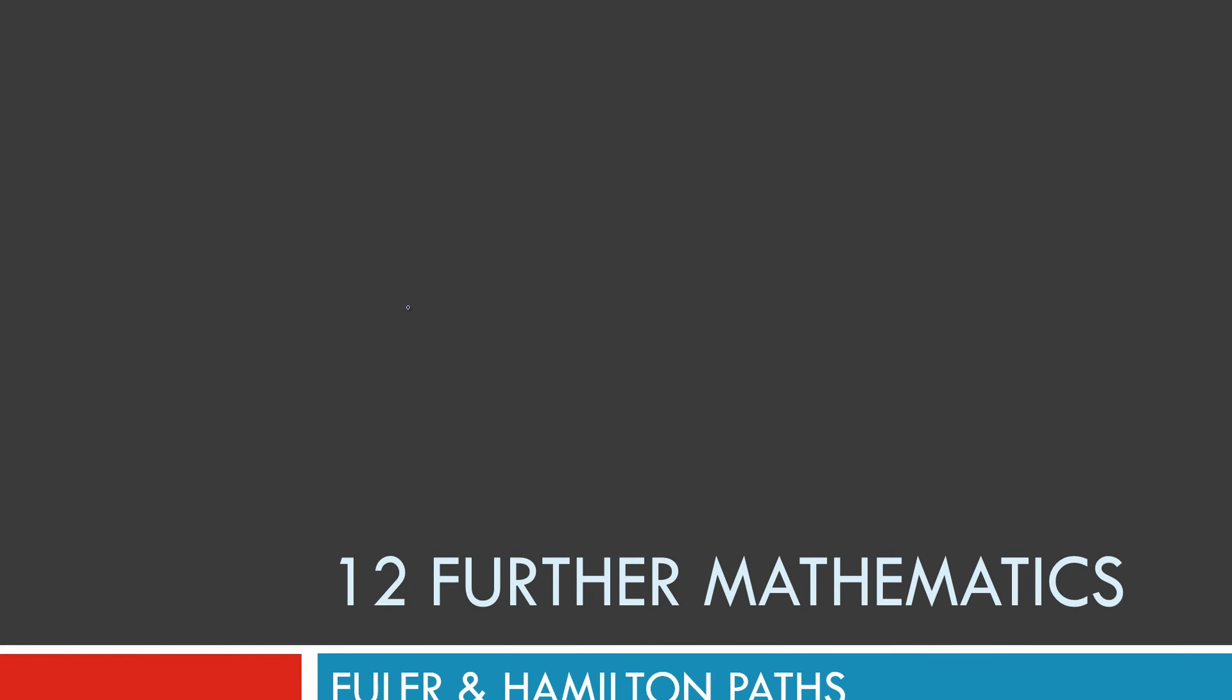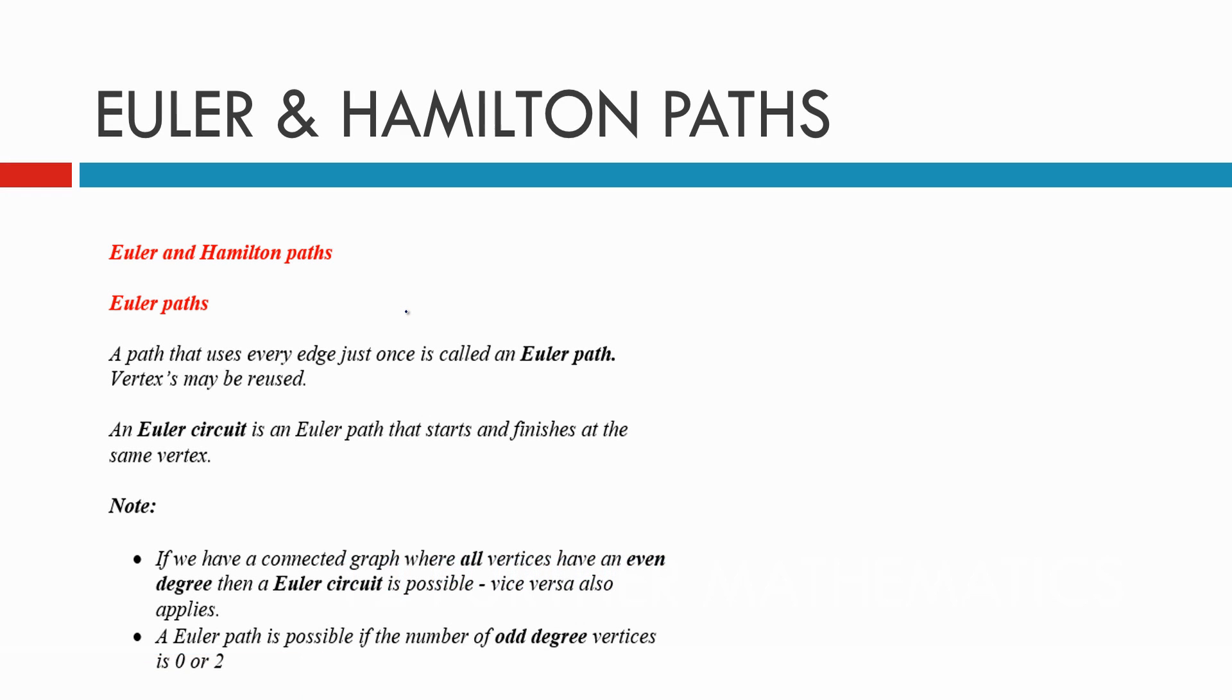Today we're working on Euler and Hamilton paths. An Euler path is a path that uses every edge just once. Vertices may be reused, but you can't cross over an edge more than once.